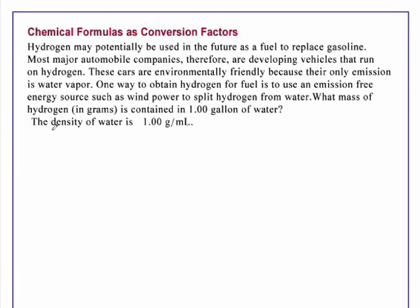One way to obtain hydrogen for fuel is to use an emission-free energy source such as wind power to split hydrogen from water. What mass of hydrogen in grams is contained in 1.00 gallon of water? The density of water is 1.00 gram per milliliter.